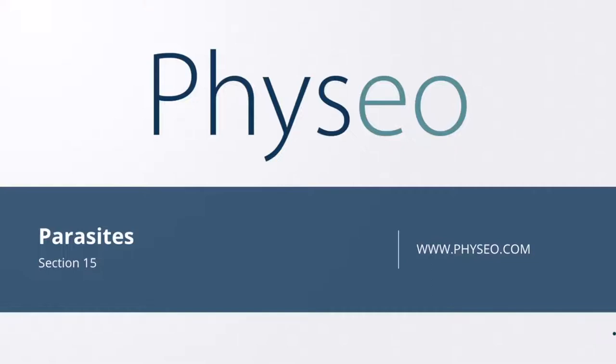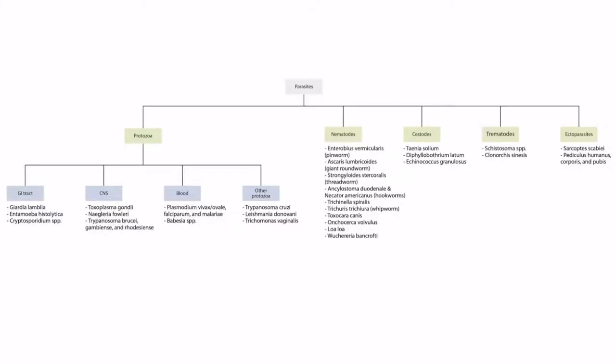Welcome to section 15 of Parasites. This is our parasite overview figure. In this video we'll be discussing Ancylostoma duodenale and Necator americanus, which are both considered hookworms, and you can see both of these organisms right here.